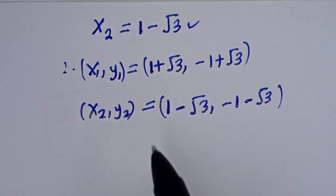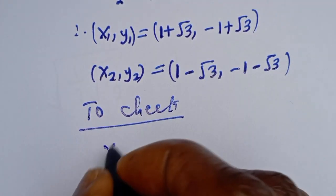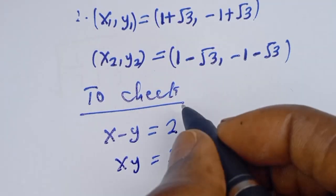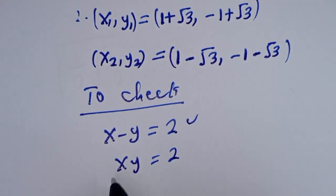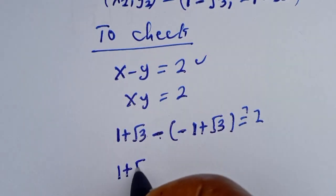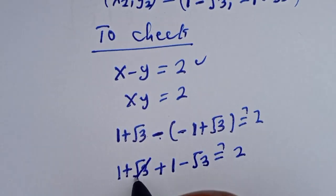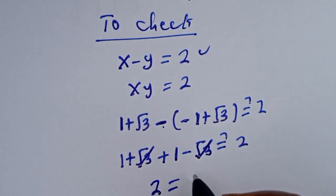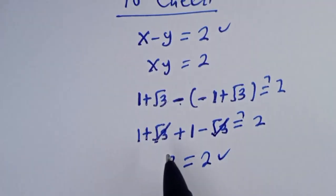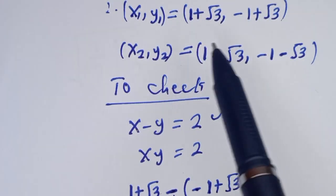Let's check to confirm. Using the first equation, x minus y equals 2: with x₁ and y₁ we have (1 plus √3) minus (minus 1 plus √3), which equals 1 plus √3 plus 1 minus √3. The √3 terms cancel, giving 2 equals 2, which is true.